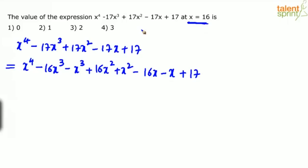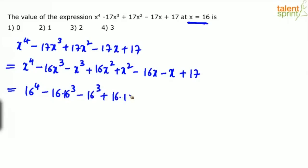You might wonder — the expression has just been split into two terms, hasn't it become more complex? But when you substitute x = 16, it becomes very easy to simplify. So: 16⁴ - 16·16³ - 16³ + 16·16² + 16² - 16·16 - 16 + 17.